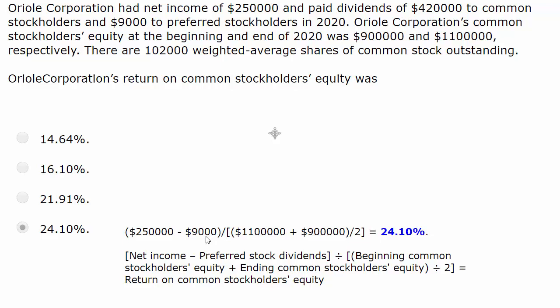Then we divide by common stockholders' equity. We had $1,000,001 at the end and $900,000 at the beginning. We add those together and divide by two to come up with the average common stockholders' equity. When we work through all of that math, we get 24.1%. So the return on common stockholders' equity was 24.1%.